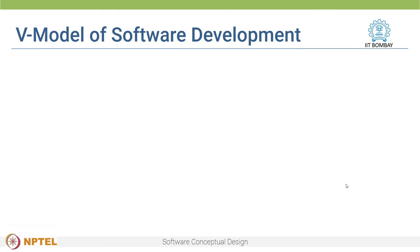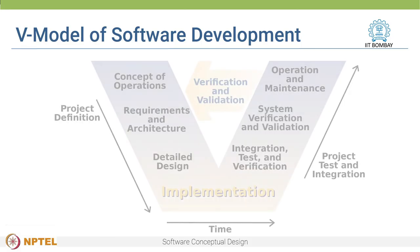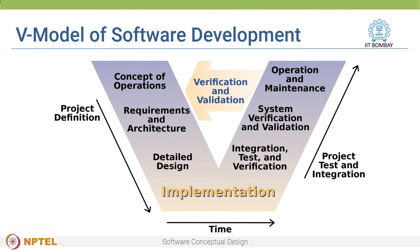A variation of the waterfall model is the V model of software development. As we can see in the figure, instead of a sequential process, the process steps are bent upwards after the implementation phase to form the typical V shape. Like the waterfall model, we start from the requirements and come up with the design and implement the software system. After that, we test and verify individual modules and validate it with the design. After validation of the individual modules, we then verify and validate the entire system and compare it and validate it with the architecture.